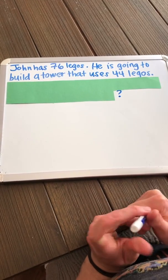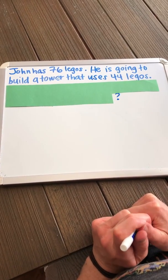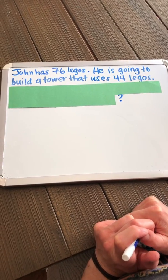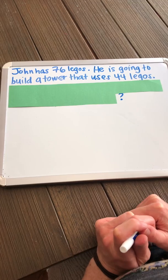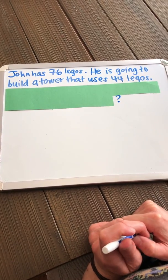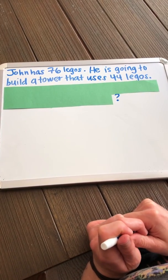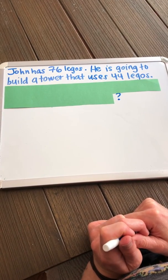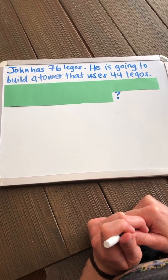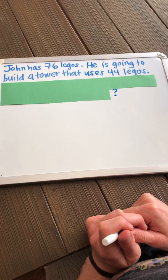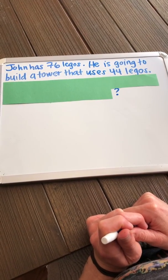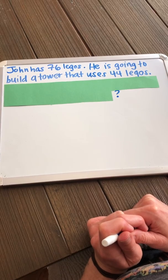Today we are going to be adding and subtracting story problems. In these story problems we are going to use a strategy called the three-read strategy. This strategy is going to help us understand the story problem and what it is asking us to do.